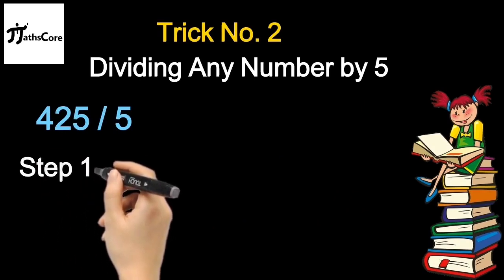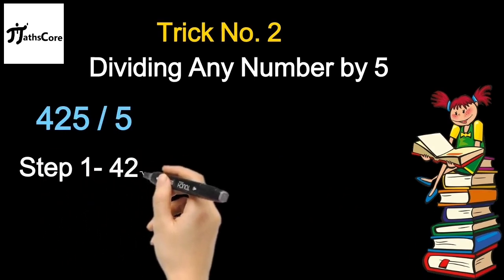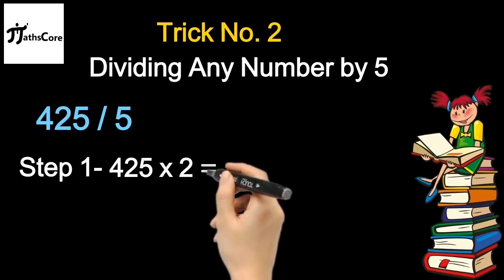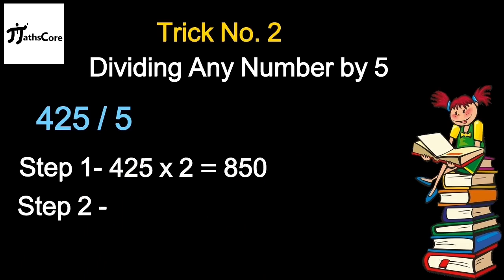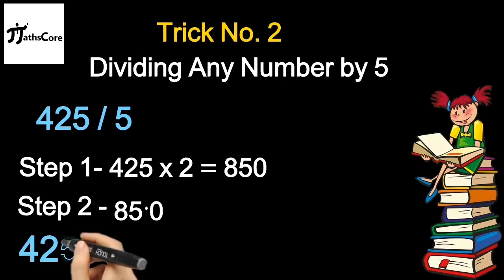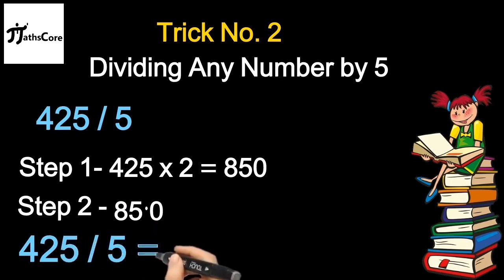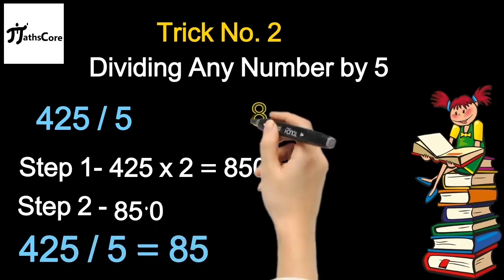In the first step you need to multiply the dividend with 2. So 425 multiplied by 2 equals 850. Now take this 850 in the next step and put the decimal point after 1 place from the right. And this is your final answer: 425 divided by 5 equals 85.